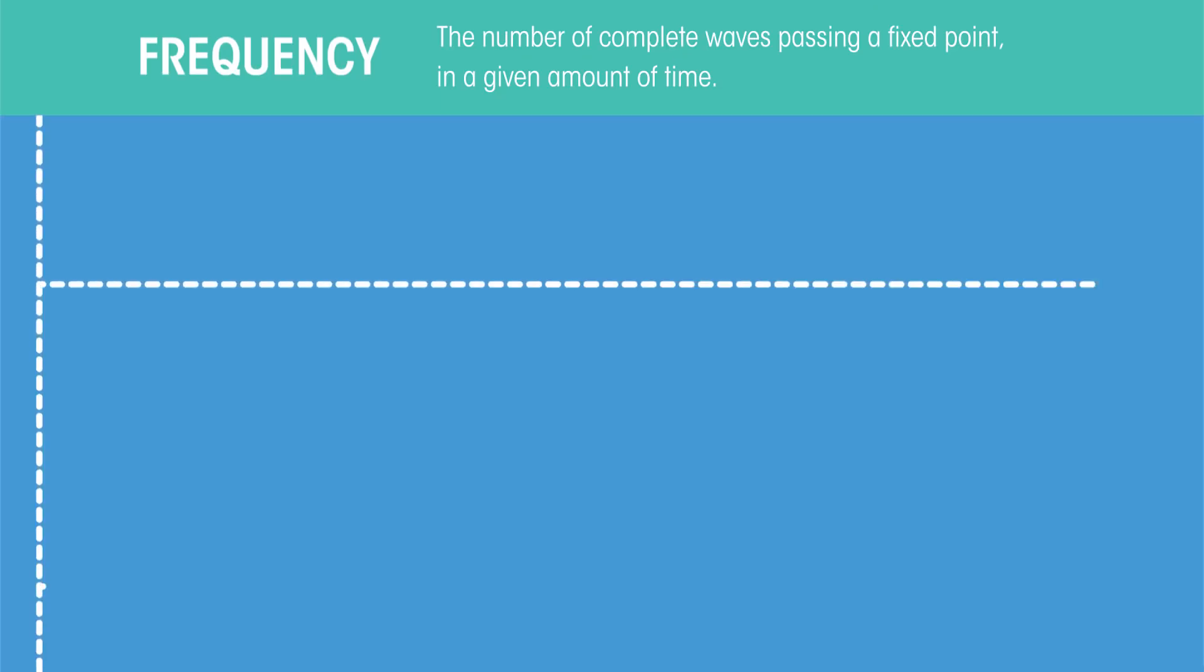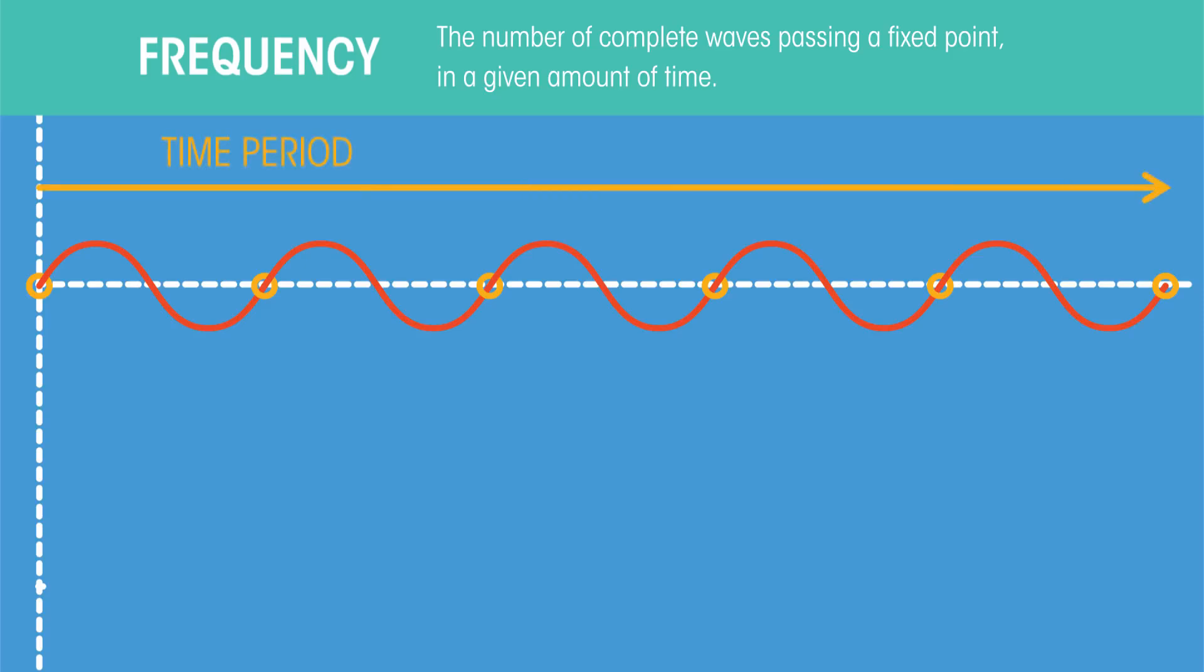The frequency of a wave is the number of complete waves passing a fixed point in a given amount of time. This time period is usually one second. This is what one complete wave looks like.